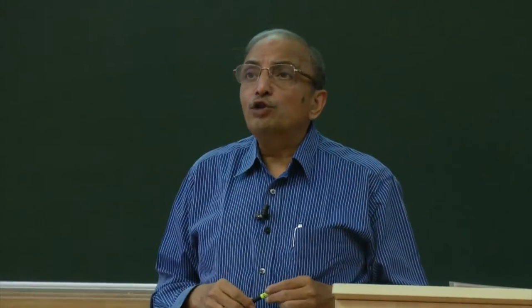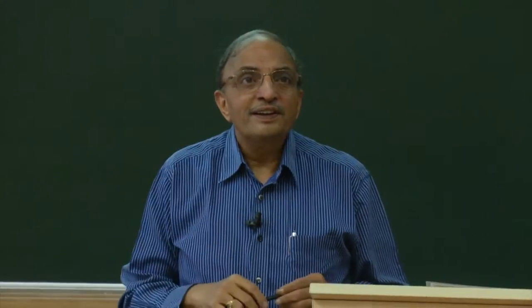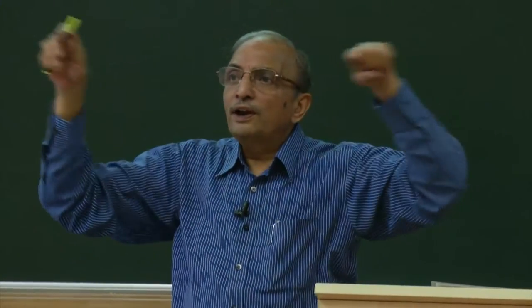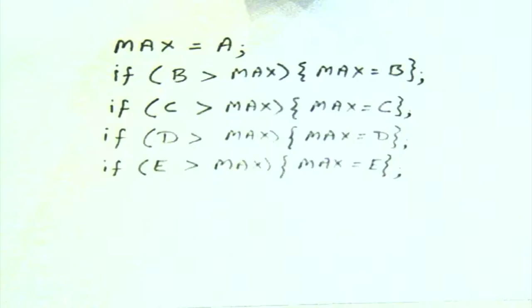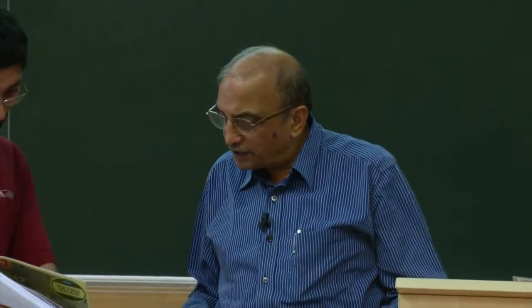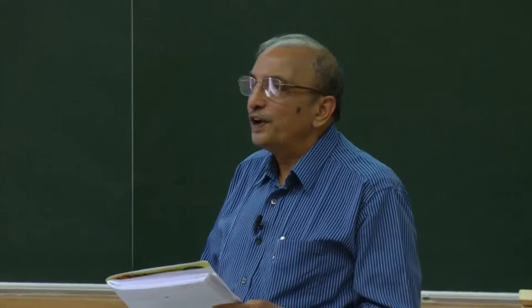If you were to draw a flowchart for finding out the largest of five numbers, can you write it in a single page? You will have one diamond-shaped box: Is A greater than B? Yes. Now B greater than C? Yes. Now C greater than D? Yes. Now D greater than E? Et cetera. This is an interesting attempt by one person to find out the maximum of three numbers. But anyway, I figured out that you can actually write a program for finding out the largest of three numbers using that approach.